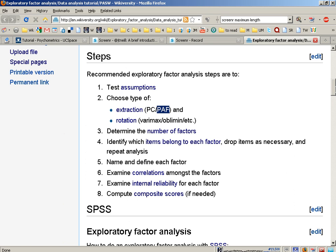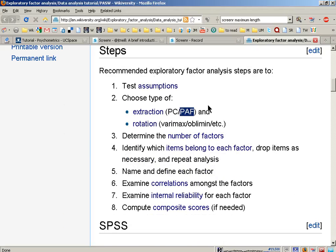The second main decision about the type of analysis is the rotation. This can either be orthogonal, or in SPSS language varimax, which is for relatively unrelated factors that are independent of each other. Or we can do oblique rotation, which in SPSS is called oblimin rotation, and that allows factors to be correlated.